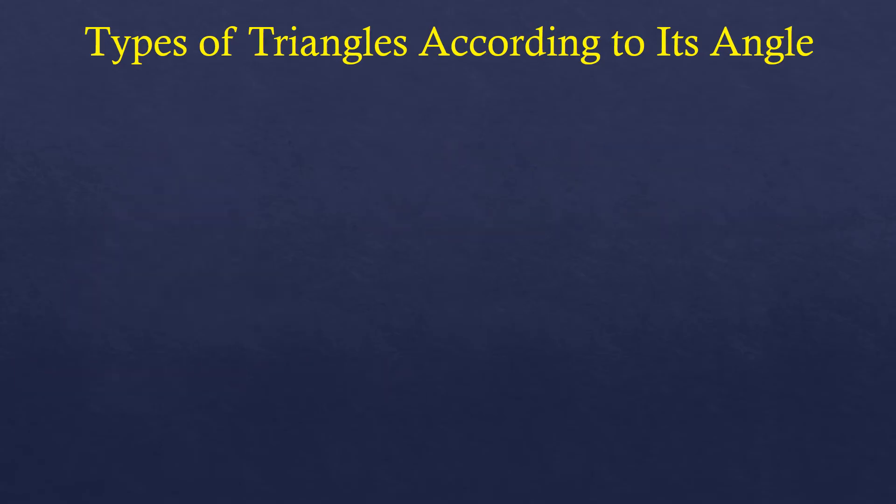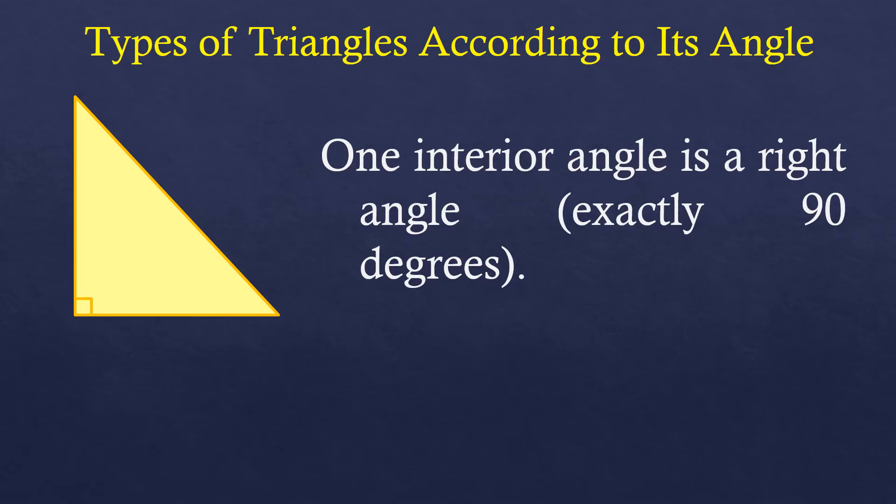Now if we have this type of triangle where one interior angle is a right angle, which means exactly 90 degrees, then it is a right triangle.